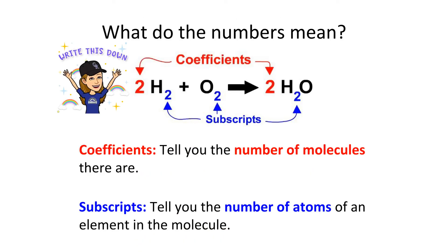So what do the numbers mean? Make sure you're writing this down in your notes. The coefficients tell you the number of molecules there are. They are the things that come in front, just like in math class. The coefficients are the numbers that come in front. And the subscripts tell you the number of atoms of an element in the molecule. The subscripts are specific to the element. The coefficients are applied to the entire molecule.